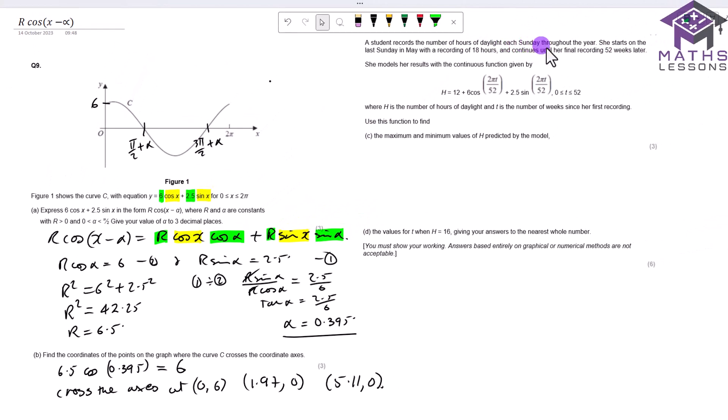A student records a number of hours a day each Sunday throughout the year. She starts last Sunday in May, recording 18 hours, and continues her final recording, 52 weeks. She models the results with a continuous function 12 plus 6 cos, let's think of this as x and 2.5 sin x. It's exactly the same function, except instead of x, we've got 2 pi t over 52. So what we're doing is we're letting x equal 2 pi t over 52 here, and you've got an extra 12 added on.